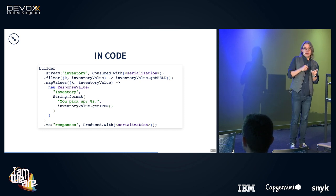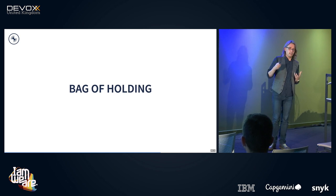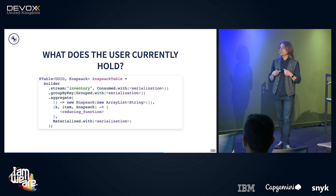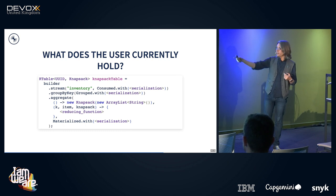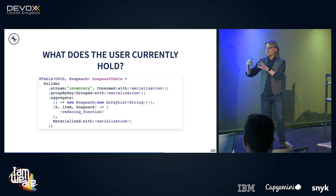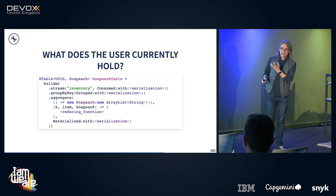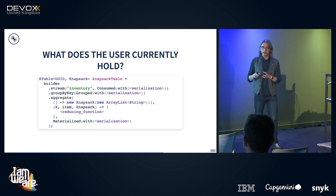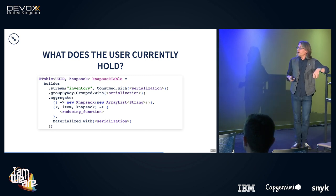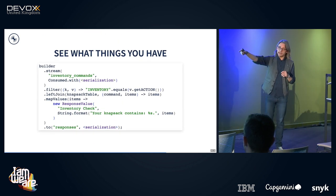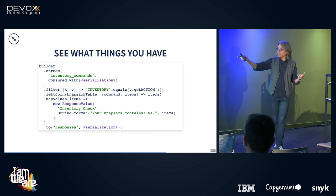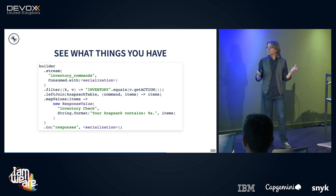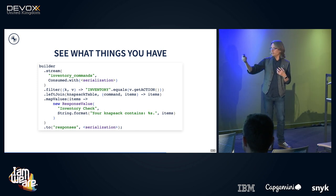How do we check what we've picked up? We look at the stream of inventory items. Build a new stream from the inventory messages, group by user ID, and do a fold — start with an empty array list, add each item as you see it. That builds a table of each user and what they're currently holding. When there's an inventory command asking 'what's my inventory', we join that to this table and send the messages back. Sometimes they won't hold anything, so it's a left join and you may get an empty list.